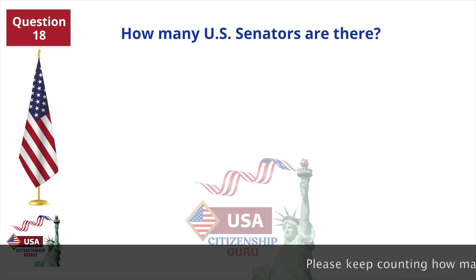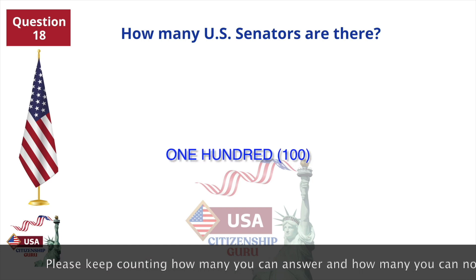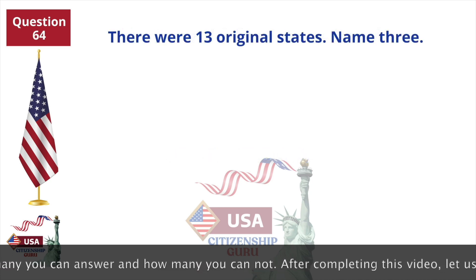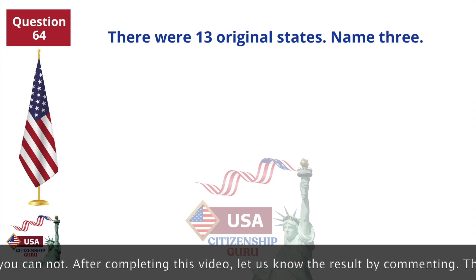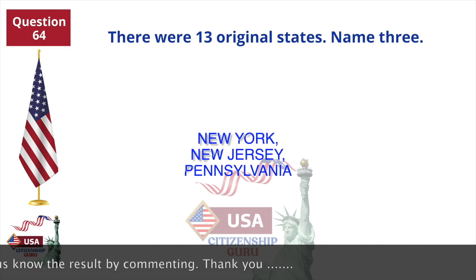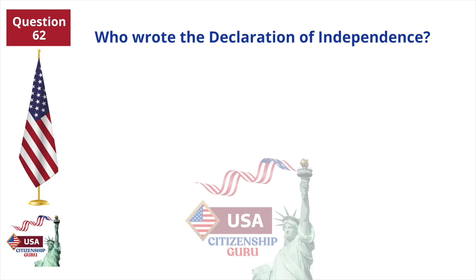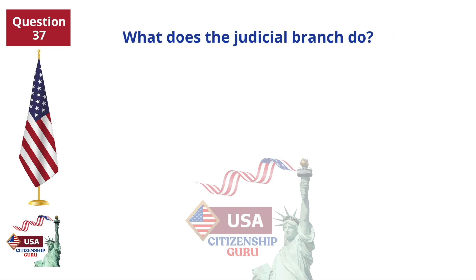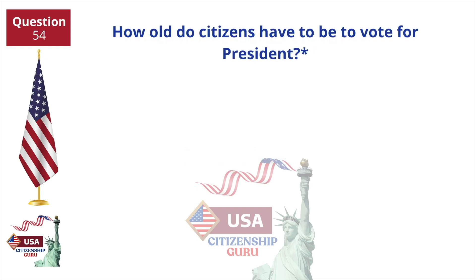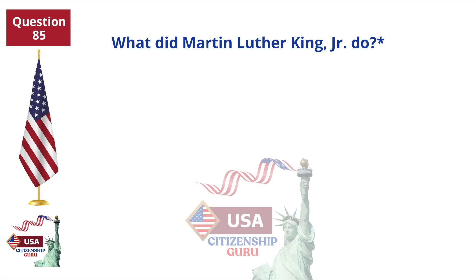How many U.S. Senators are there? There were 13 original states — name three. Who wrote the Declaration of Independence? What does the judicial branch do? How old do citizens have to be to vote for president? What did Martin Luther King, Jr. do?